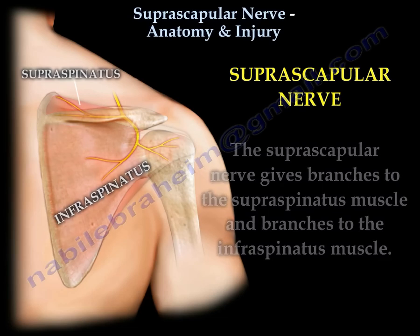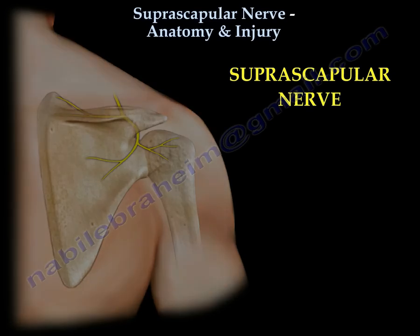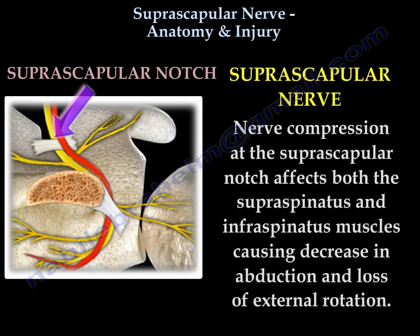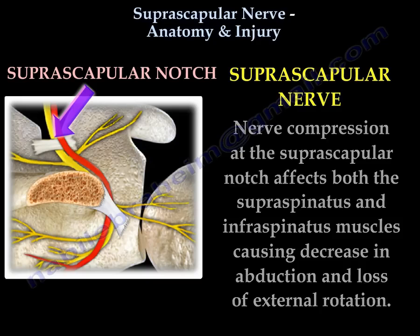Nerve compression at the suprascapular notch affects both supraspinatus and infraspinatus muscles, causing decrease in abduction and loss of external rotation.